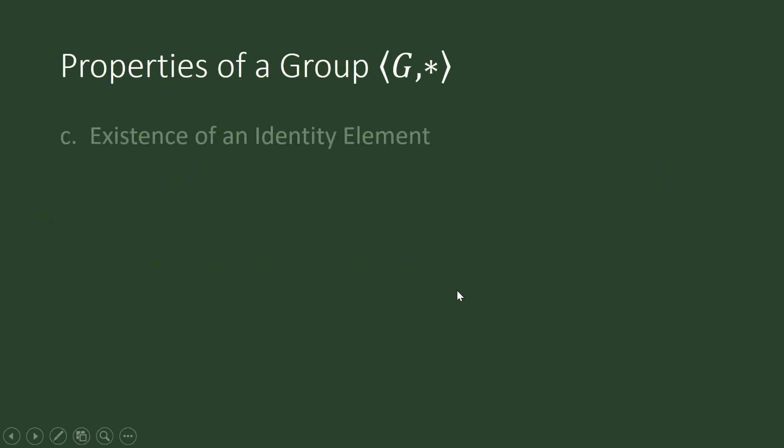The other two properties are the existence of an identity element. Again, pay attention to how I read it. There is an element e in g. So that is our symbol for there is or there exist. There is an identity element in g such that for any element of g or for any a in g, e star a is equal to a star e and that is equal to a.